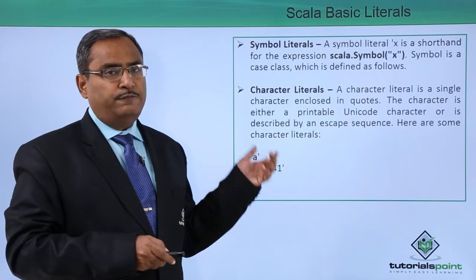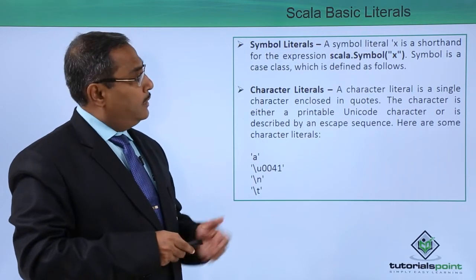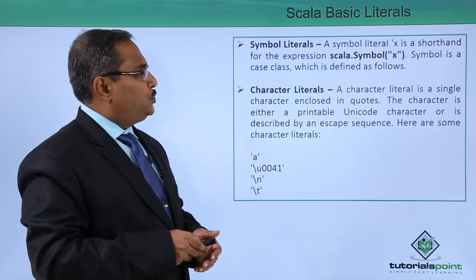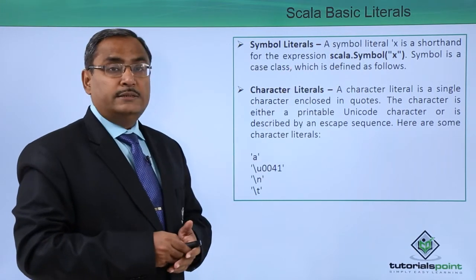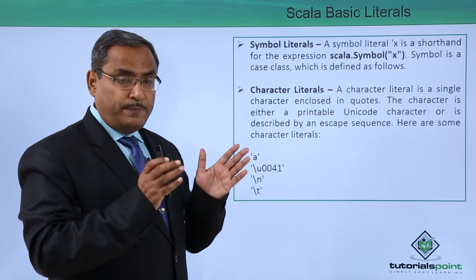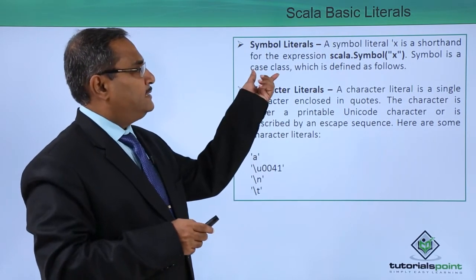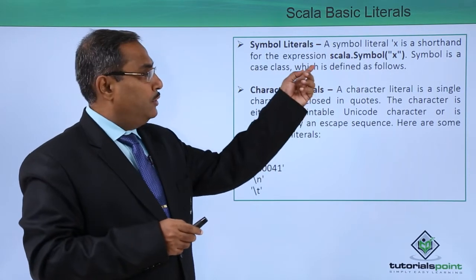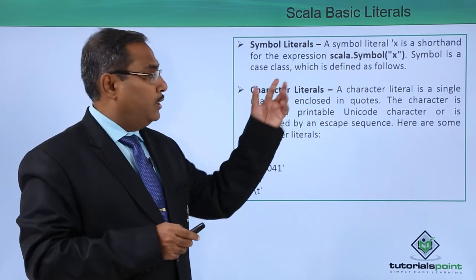The fourth literal type is the symbol literal. A symbol literal x is a shorthand for the expression scala.Symbol("x"). Symbol is a case class which is defined as follows, and in this way we define the symbol literal.